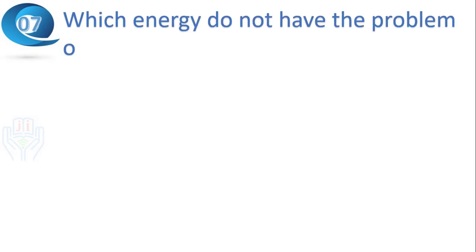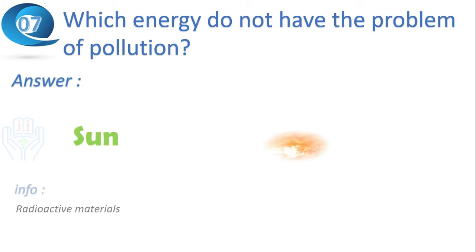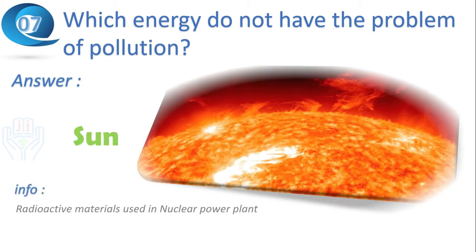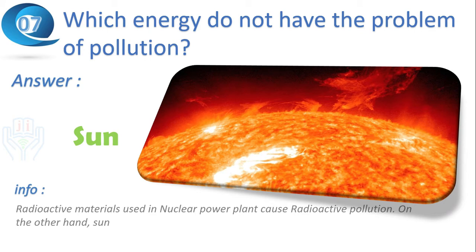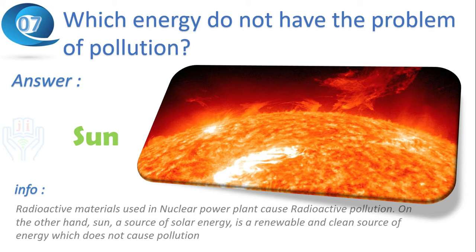Next question: which energy source does not have the problem of pollution? Answer: solar energy. Radioactive materials used in nuclear power plants cause radioactive pollution. On the other hand, the sun — a source of solar energy — is a renewable and clean source of energy which does not cause pollution.